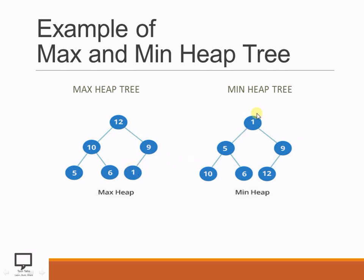Similarly, 9 is a parent node having a greater value than its child node 1. On the other hand, in the opposite case, the min heap is a tree where the parent node has a less value than its children — for example, 5 and 9. If 5 is a parent node, its children are 10 and 6, which have greater values. If 9 is a parent node, it has less value than its child 12.